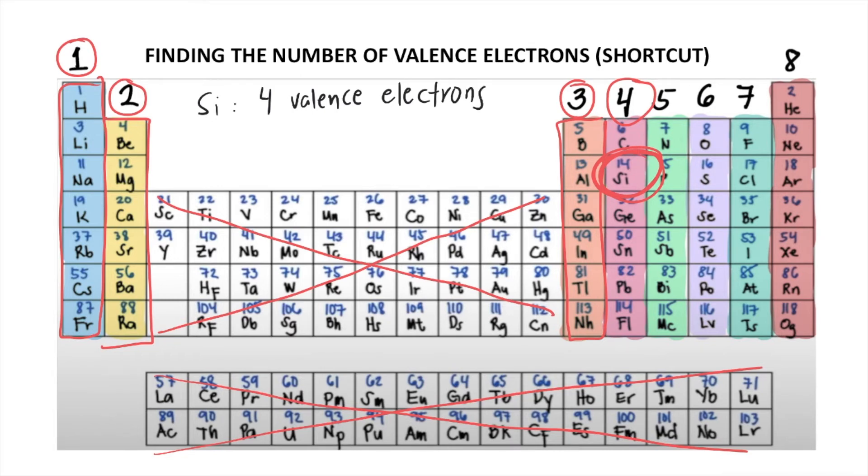Let's try another example. What if your teacher asks you, how many valence electrons are there in bromine? Bromine is Br. So let's look for Br in the periodic table. This is Br. So Br is under column 7. So Br has 7 valence electrons.